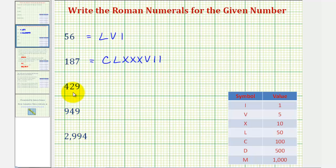Now for the next three, we'll have to use the subtraction principle. For example, for 429, we can't use four c's because we have to avoid repeating four symbols. So what we can do is put a c before a d, which would be 100 before 500, meaning we would subtract.